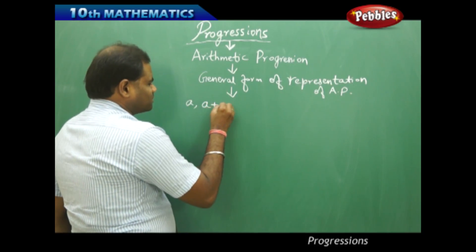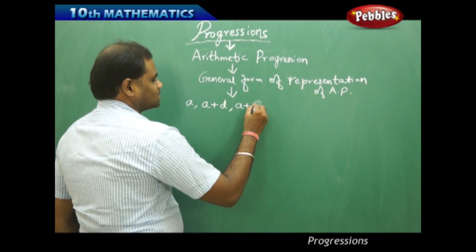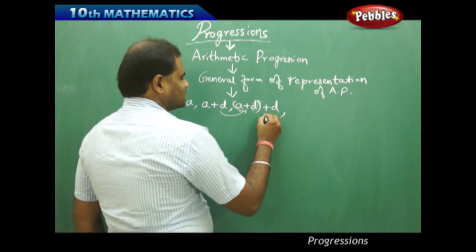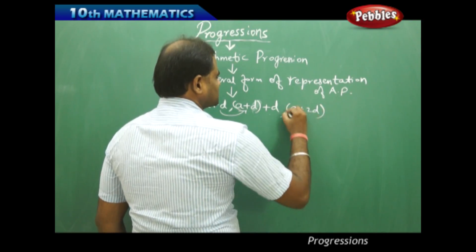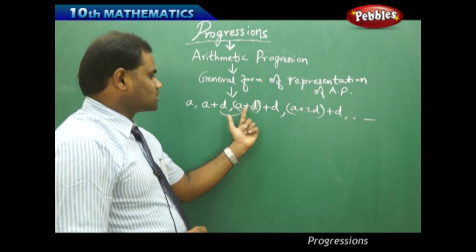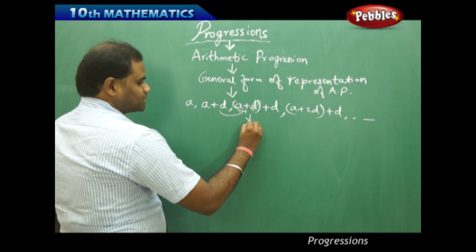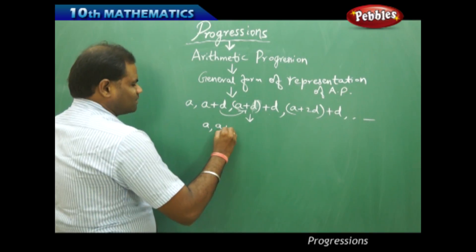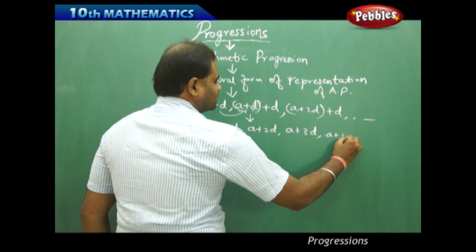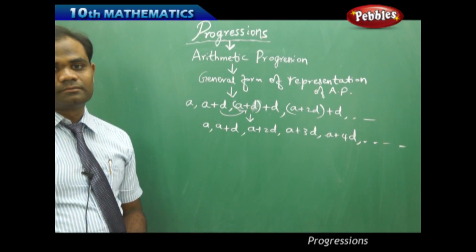The general form of representation of an arithmetic progression is generally taken starting with a first term A. Because the pattern says there is a fixed element added to each of its terms, let's take the fixed element as D. So the terms become A, then A plus D, then A plus D plus D which is A plus 2D, then A plus 3D, A plus 4D, and so on and so forth.